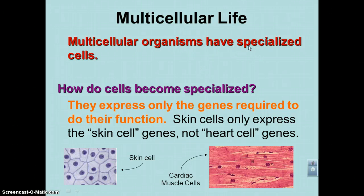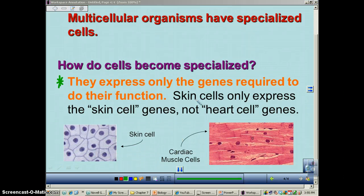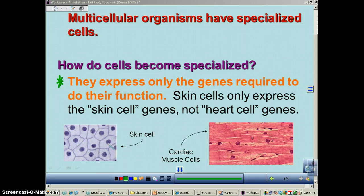Multicellular creatures have specialized cells. How do they become specialized? They express only the genes required to do their function. For example, here we have two different kinds of cells: a skin cell — a type of epithelium — and cardiac muscle. Remember those intercalated discs? These two cells, even though each nucleus contains the same amount of DNA, this skin cell reads different portions of the DNA. It will transcribe and translate different genes — it expresses different genes — and that gives it its special shape and allows it to do a special function.